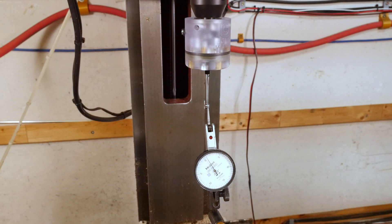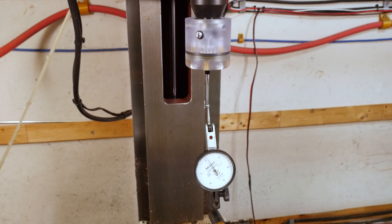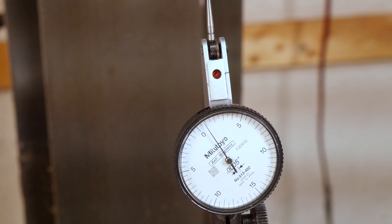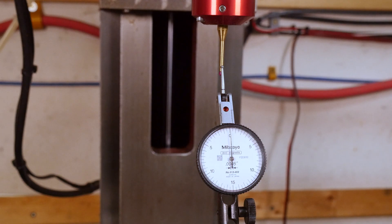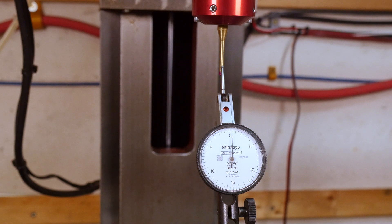When it comes to probe adjustment there are sort of two main things to think about. The first is the radial adjustment and that's what you tweak to make an indicator read zero when it's touching the ball. The second thing is the angular adjustment which is what you can tweak to make sure that the shank of the stylus is in line with the spindle.